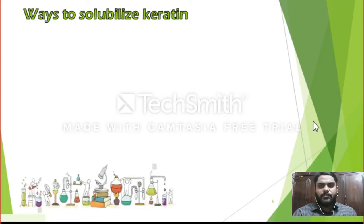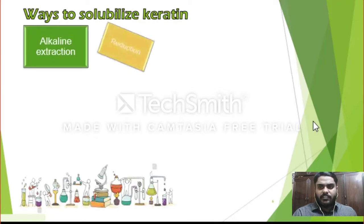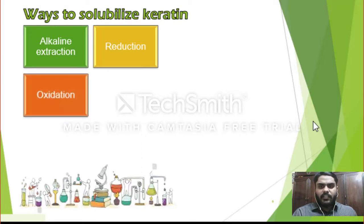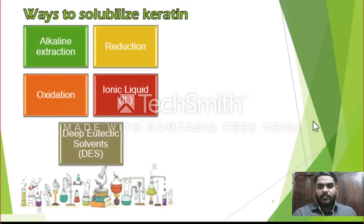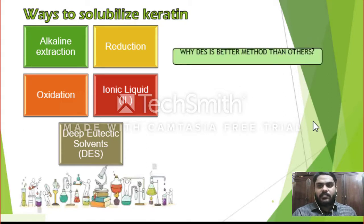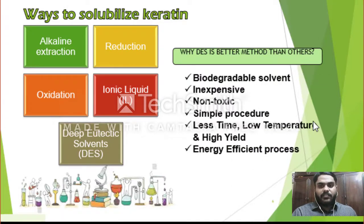To maximize the use of keratin, it should be solubilized first because keratin is highly insoluble in nature. To solubilize it, methods like alkali extraction, reduction, oxidation, and ionic liquids are used. However, I strongly endorse the deep eutectic solvent method to solubilize keratin, as there are numerous advantages of DES compared to other methods, some of which are shown here.